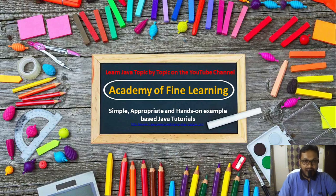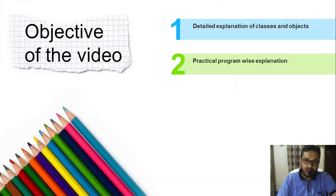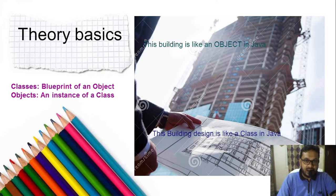Hello everyone, welcome to the channel Academy of Fine Learning. This tutorial video will see how classes and objects are implemented in Java. These two are very important features of every object-oriented programming language including Java. After watching this video we will learn the detailed explanation of classes and objects and see practical program-wise explanation for these two concepts.